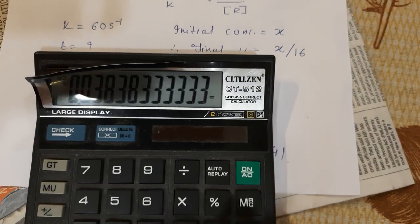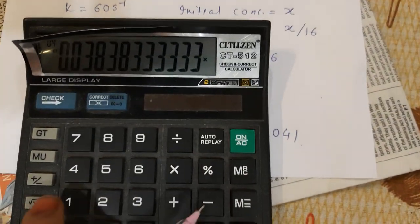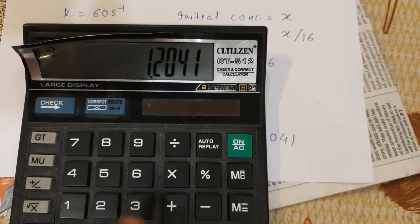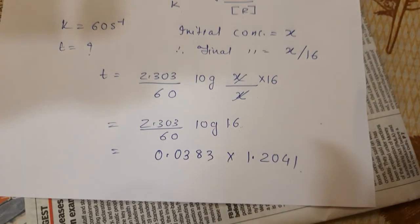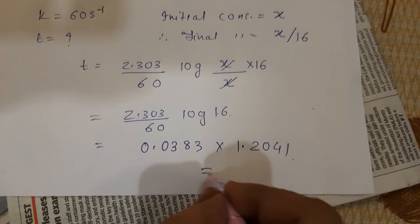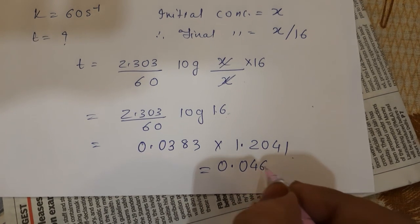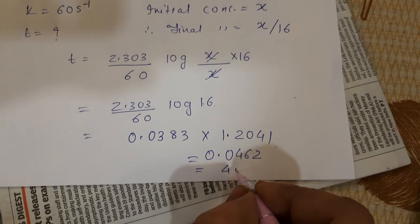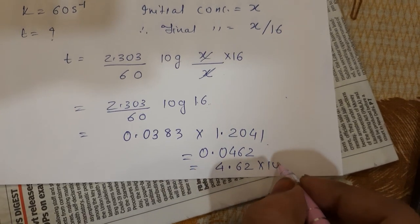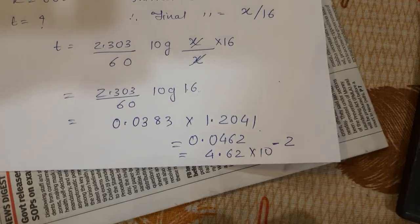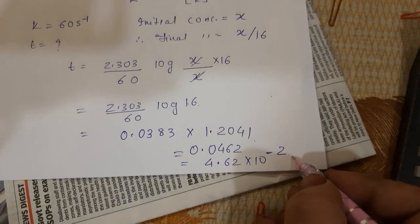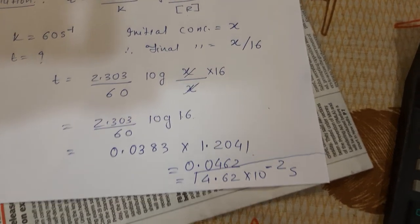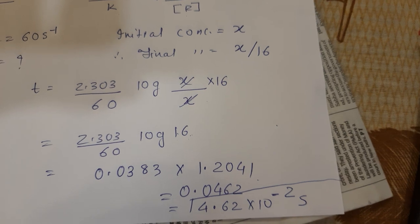Multiplying 0.0383 times 1.2041 equals 0.0462. This can be written as 4.62 times 10 to the power minus 2. Since time is in seconds, the answer is 4.62 times 10 to the minus 2 seconds. Do you understand this question, children?